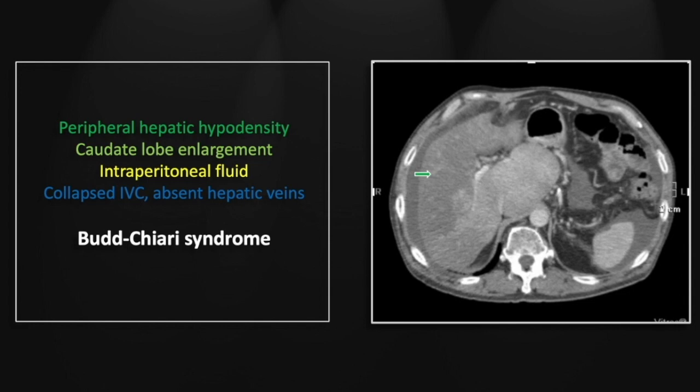The right and left liver lobes share a venous drainage through the hepatic veins, and will be relatively hypodense and relatively atrophic. Compare those to the normally enhancing and hypertrophic caudate lobe. The caudate lobe has a separate venous drainage direct to the IVC, and so is not typically as involved in this type of Budd-Chiari syndrome.